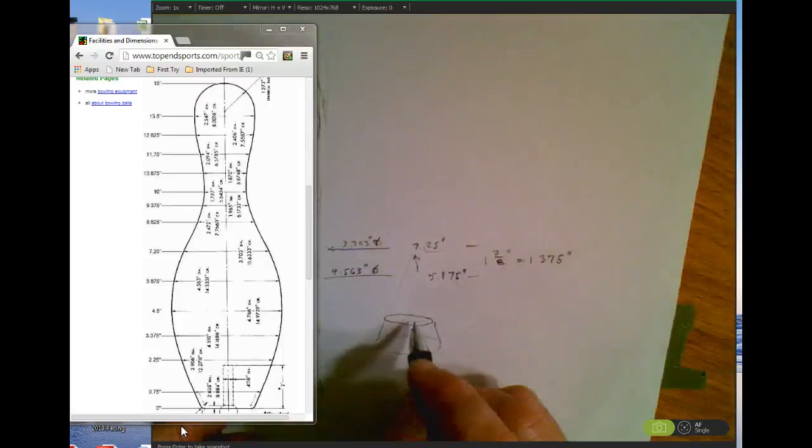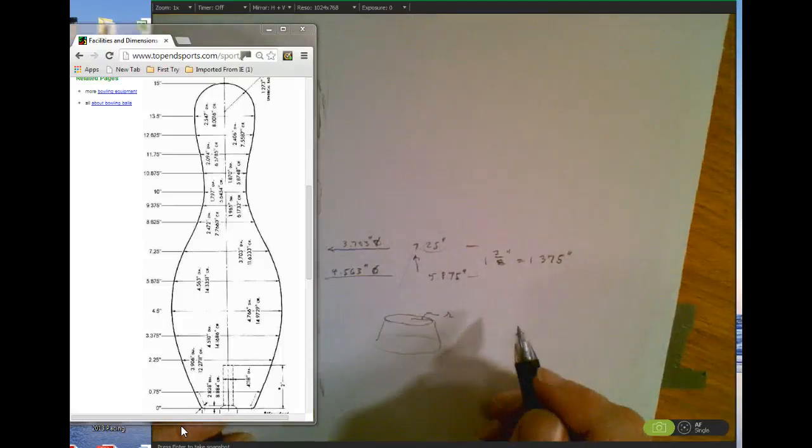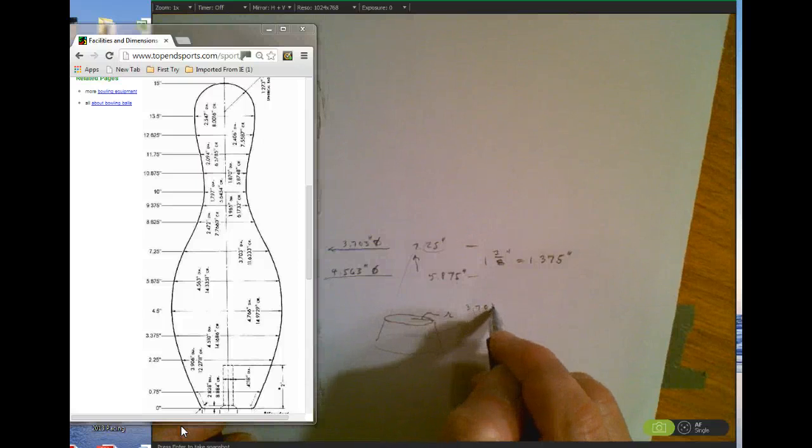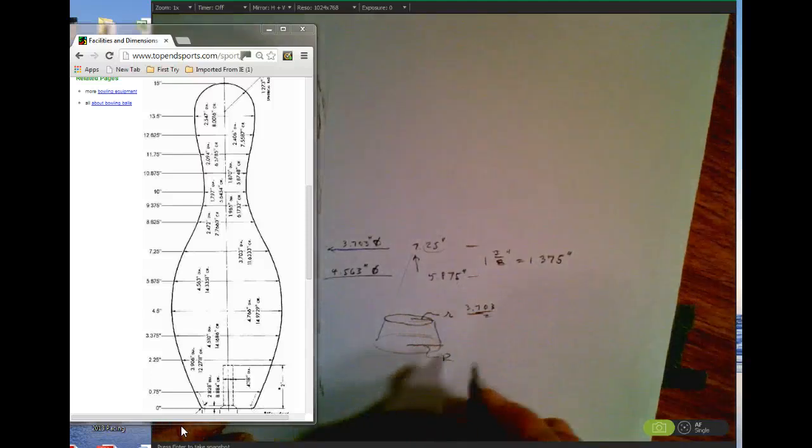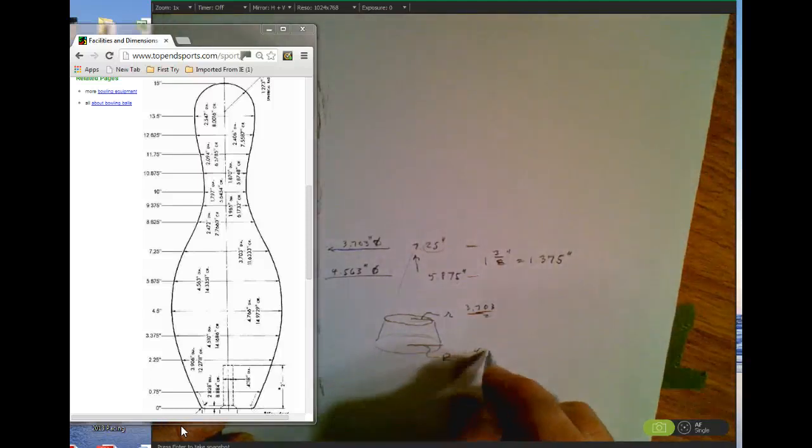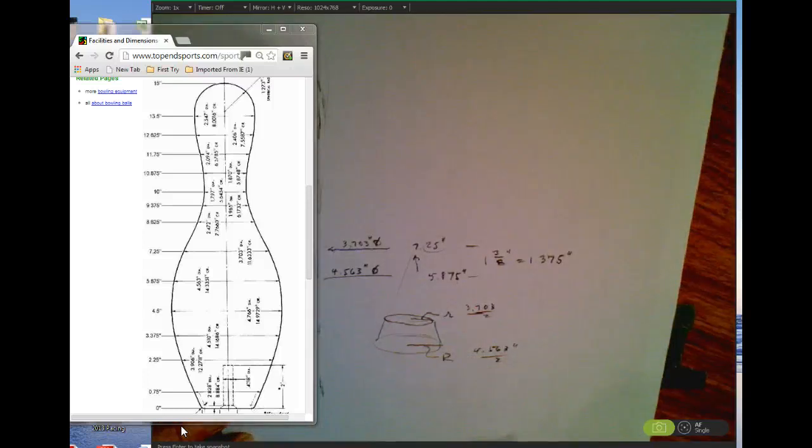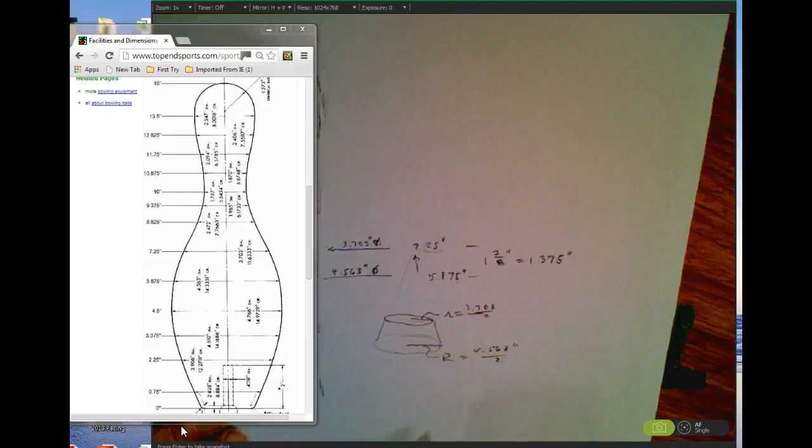That could be part of a frustum. And what is this? This is R, and R here is what? 3.703 over 2. And this is called, this little r, let's call this one big R, and big R would be 4.563 inches over 2.